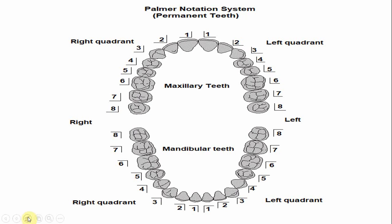In the Palmer notation system, counting from the central incisor, lateral, canine, first premolar, and second premolar — for the right quadrant, the symbol of the right mandibular quadrant is used with the number five. Similarly for the left side, the mandibular second premolar of the left side is also number five, with the symbol of the mandibular left quadrant.